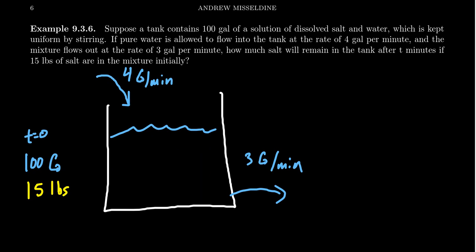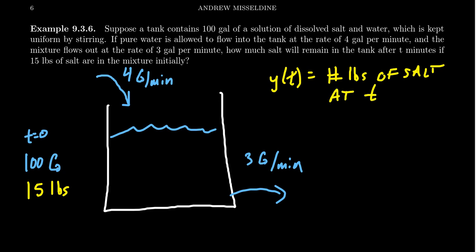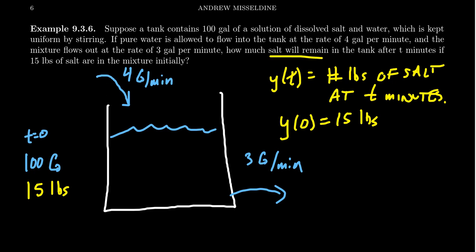Let's introduce a function y of t — this is going to be the number of pounds of salt at time t minutes. We know the initial value: y(0) = 15 pounds. And we're going to try to figure out the salt remaining in the tank after T minutes. That's what we're trying to find — the function y(t) is the answer to this question.